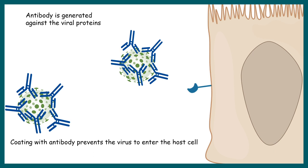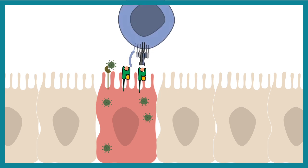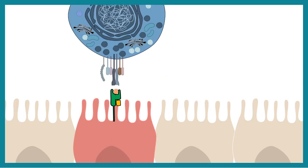The adaptive immune system also takes a vital role in viral defense. Viruses enter the cell, and inside the cell viral proteins are displayed on class I MHC molecules. Class I MHC-displayed viral peptides can be recognized by CD8-positive cytotoxic T cells.